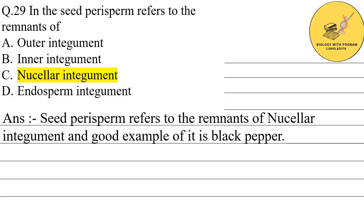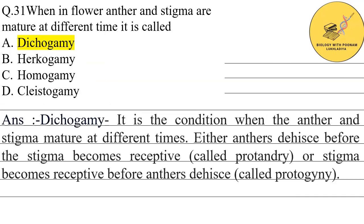The next question is: in the seed, perisperm refers to the remnants of what? The answer is nucellus. Seed perisperm refers to remnants of the nucellus, and the best example for this is black pepper.